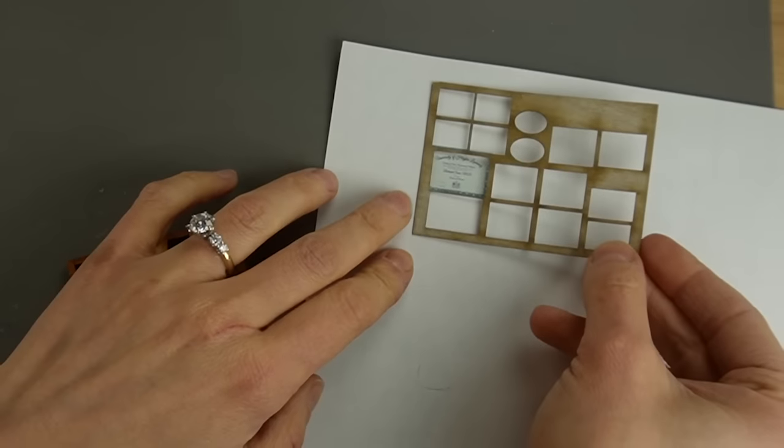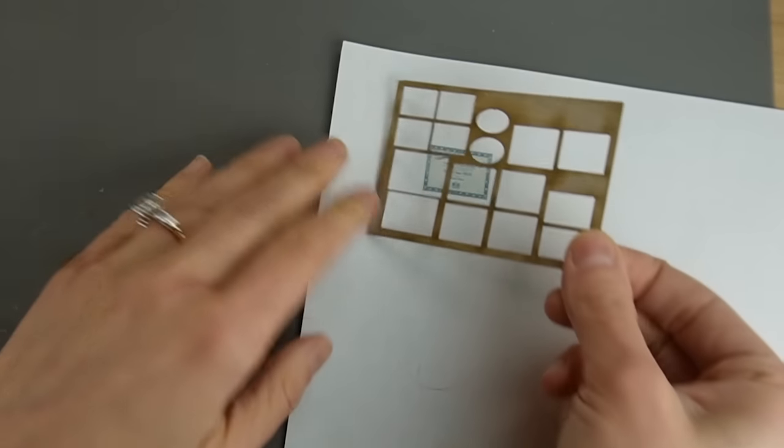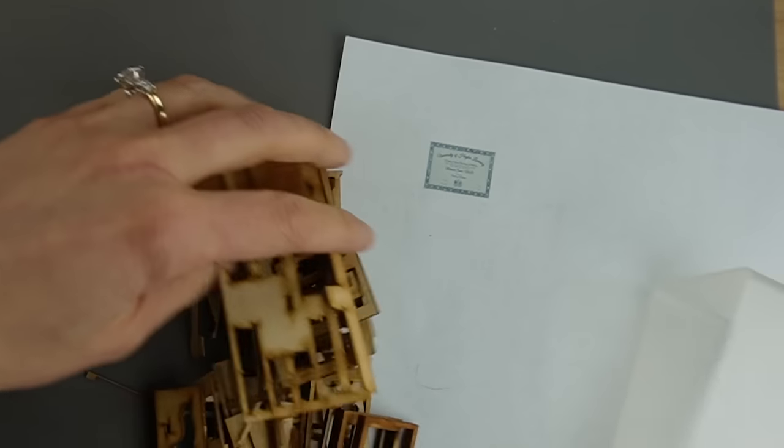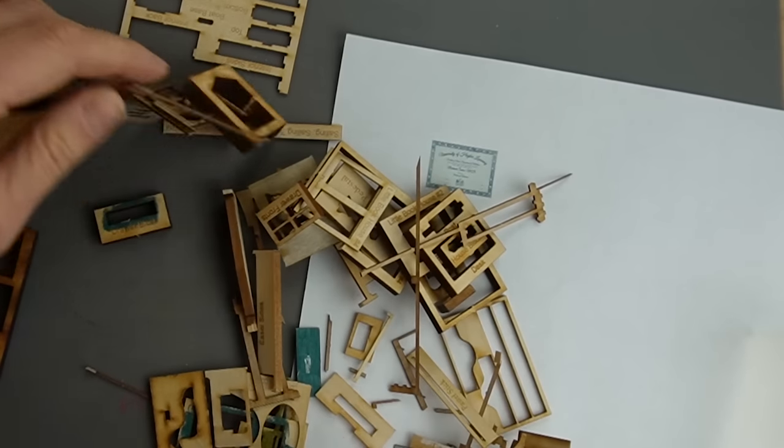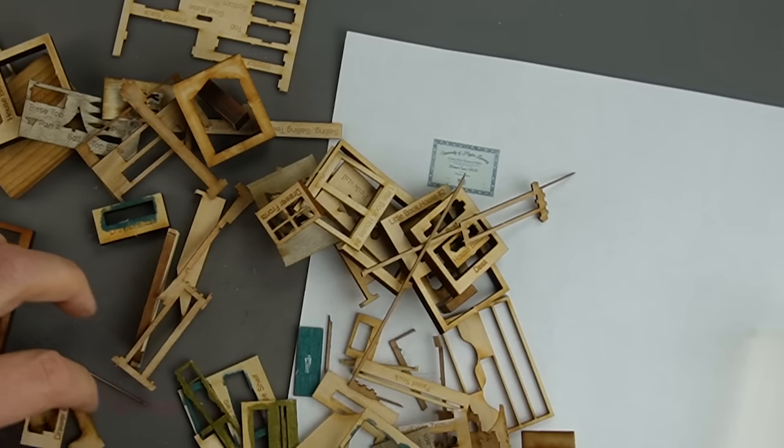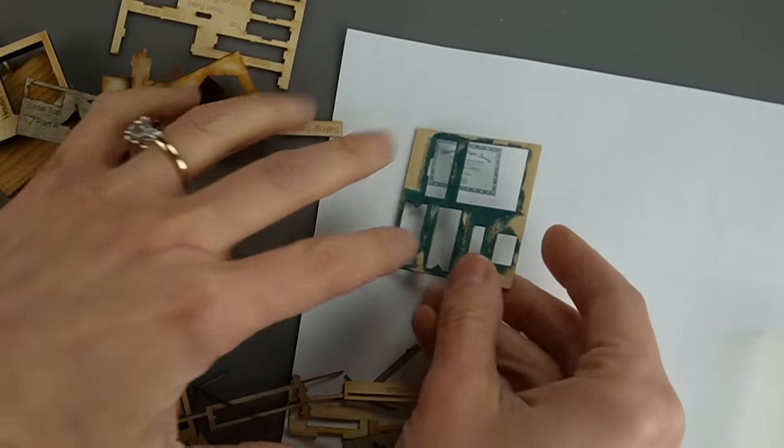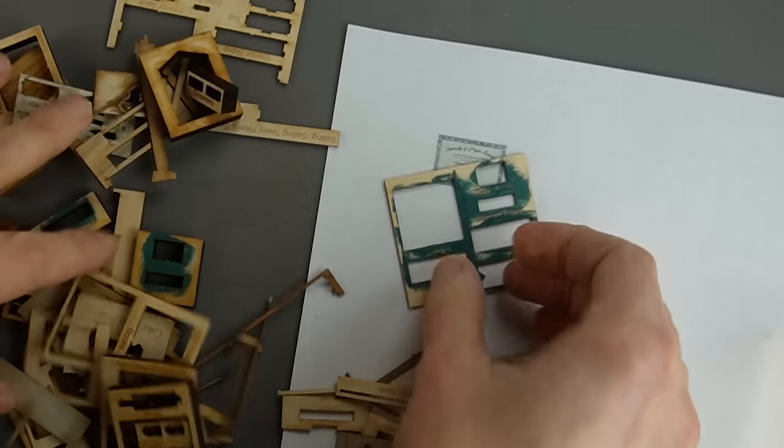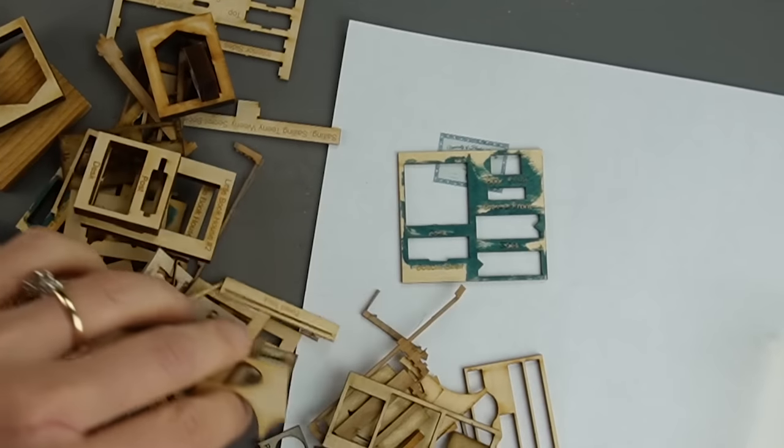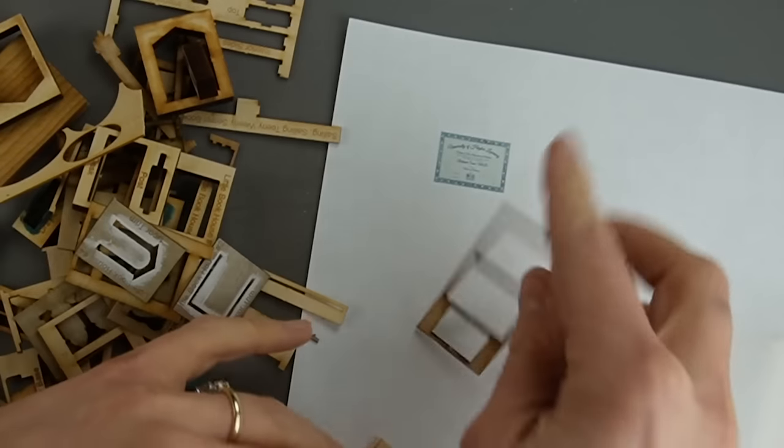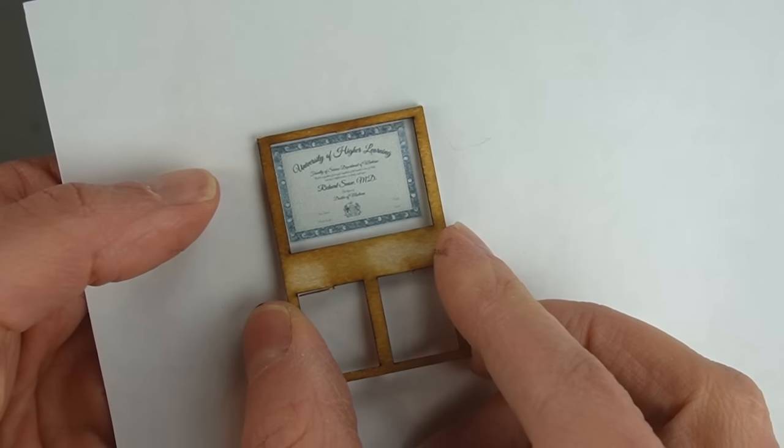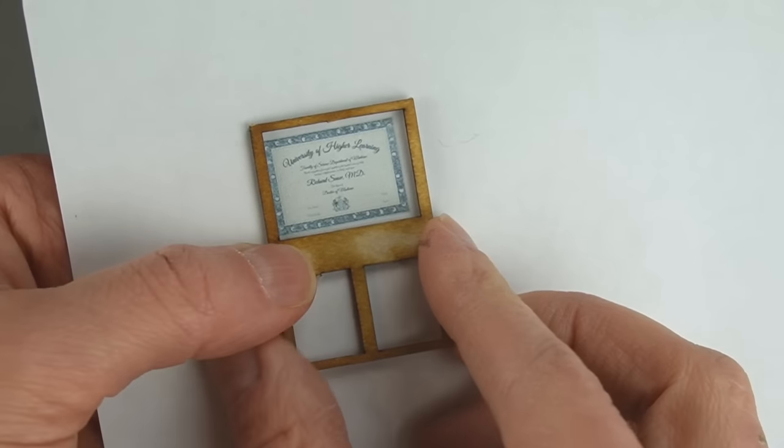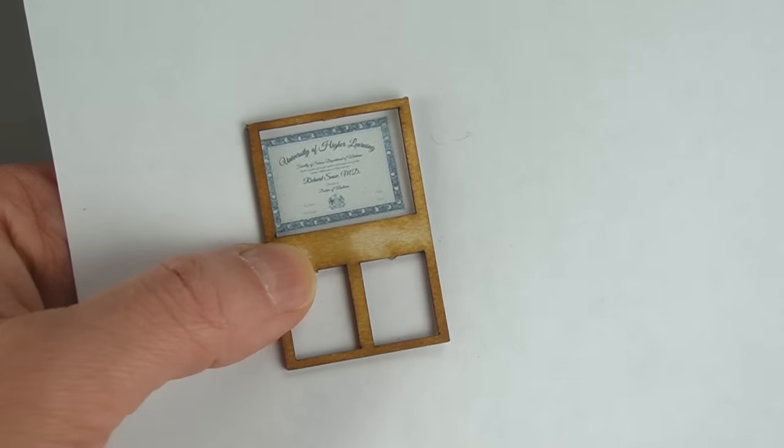This miniature lab belongs to either a scientist or a doctor, so I printed this miniature certificate for the wall. To avoid having to make a frame entirely from scratch, I'm looking through my collection of laser cutouts. These are all the pieces I've saved from various dollhouse miniature kits I've assembled. This piece will be perfect once I cut this side to be the same thickness as the other sides.